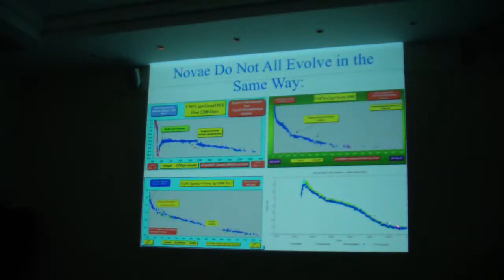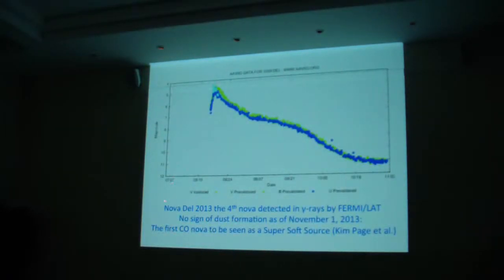And it went into a decline. It turns out to be a carbon-oxygen nova. And on the next transparency, it was detected by gamma rays. No sign of dust formation as of this weekend. And it's the first carbon-oxygen nova to be seen as a super soft source at low-energy x-rays with SWIFT. Kim Page in Leicester is the one who does all of this stuff.